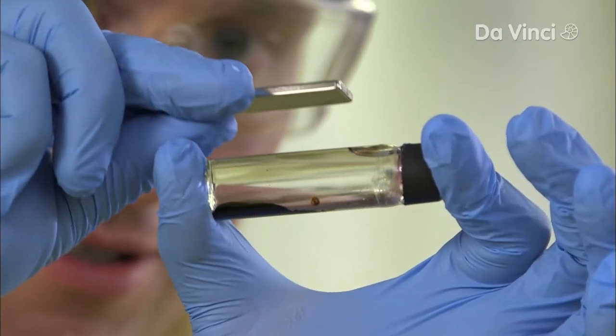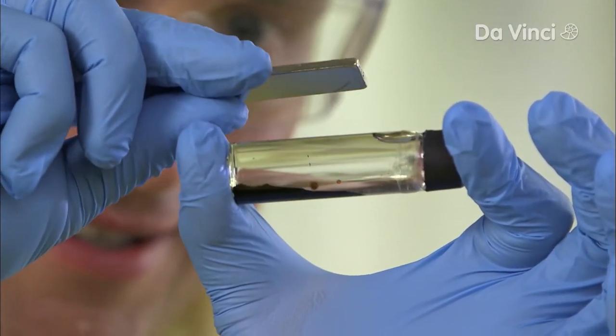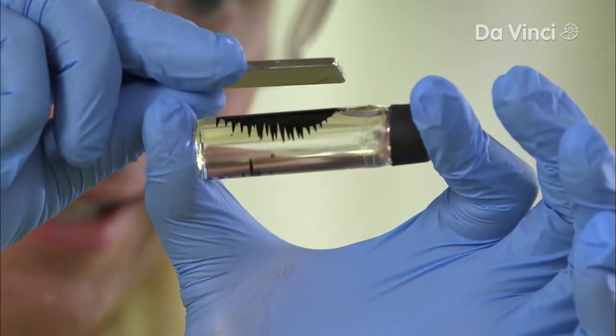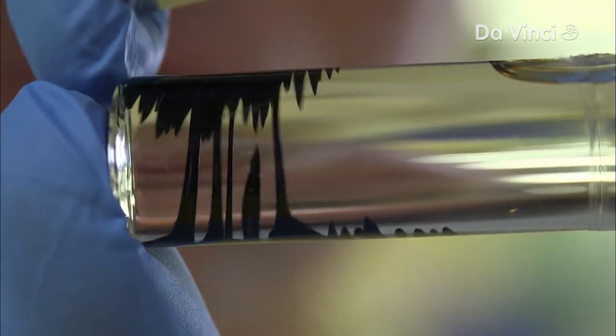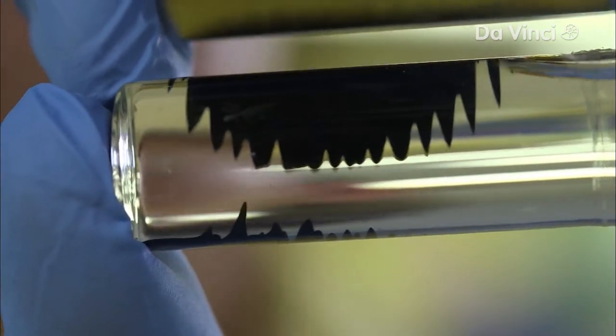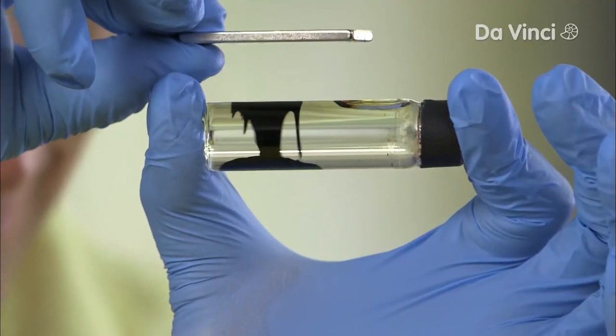Unlike most things ferromagnetic, like paper clips or iron filings, ferrofluid is a liquid, which means it behaves in a unique way. The spikes it creates are following the magnetic field lines of the magnet. You can see the magnetic field in 3D.